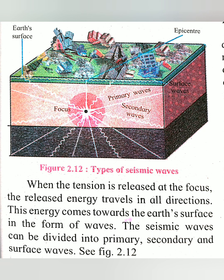These seismic waves can be divided into three types: primary waves, secondary waves, and surface waves. These waves are formed due to the tension released at the focus and travel in all directions, reaching the earth's surface.